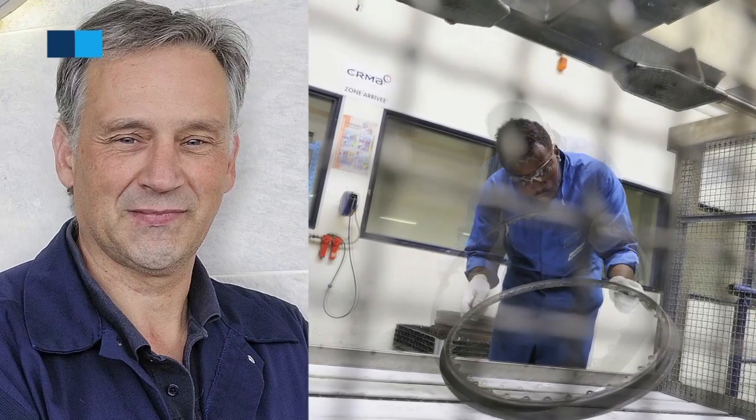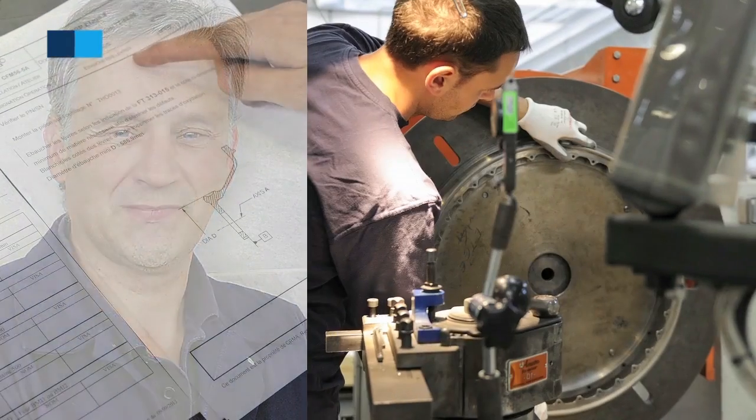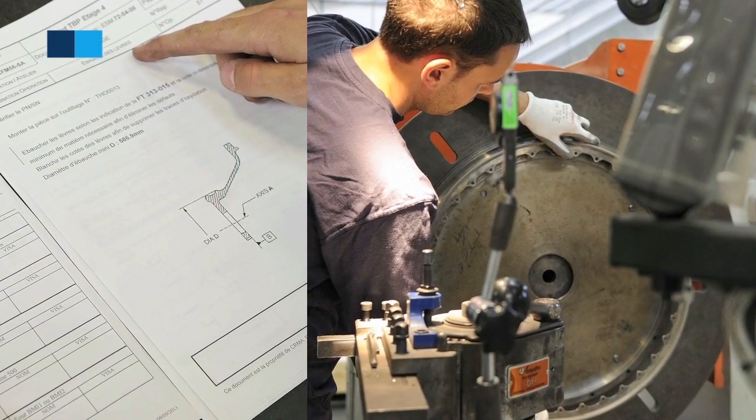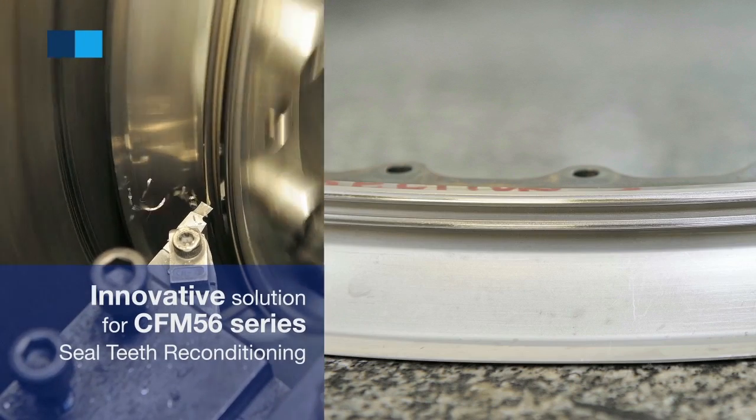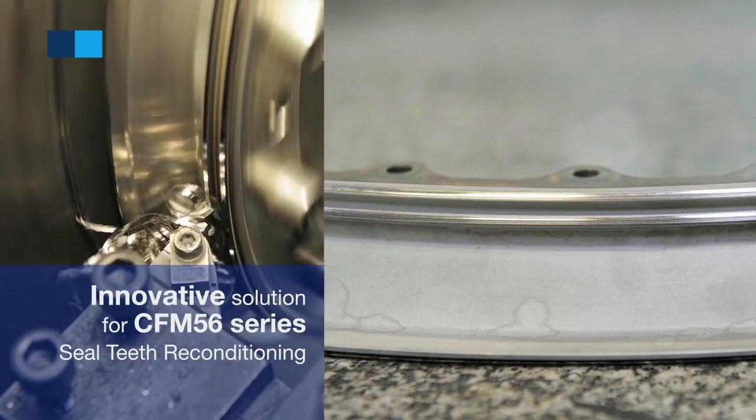CRMA, an AFI-KLM-INM Center of Excellence for Aero Repair, has developed an innovative solution under which worn or damaged low-pressure turbine rotative air seals on CFM56 series are repaired instead of being replaced.